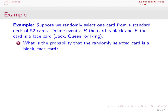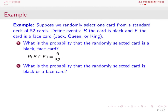Let's apply these probability rules with examples using a standard deck of 52 cards. We randomly select one card and define two events: B, the card is black (a spade or club), and F, the card is a face card (Jack, Queen, or King). First, what is the probability that the card is a black face card? This is the probability of B intersected with F. There are two black suits, each with three face cards, giving 6 black face cards out of 52. So P(B ∩ F) = 6/52.